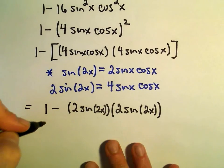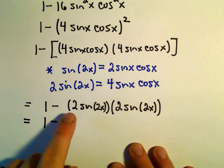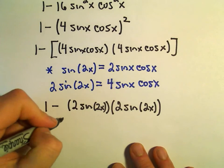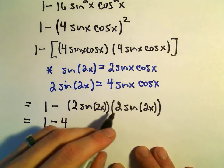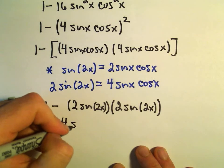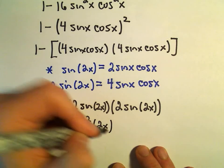Alright, well, if we rewrite this one more time, this would be 1 minus 2 times 2 would be 4. Sine of 2x times sine of 2x is going to be sine squared of 2x.